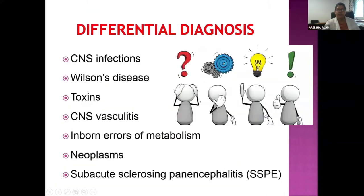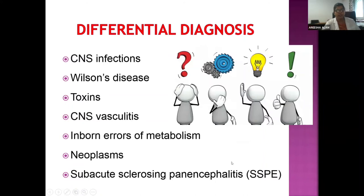Important differential diagnoses to rule out include CNS infections (most important), Wilson's disease, CNS vasculitis, toxins, inborn errors of metabolism such as maple syrup urine disease, brain tumors, and SSPE.